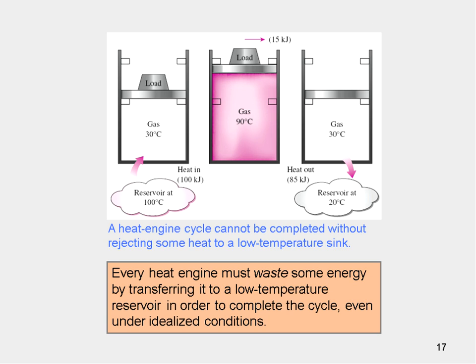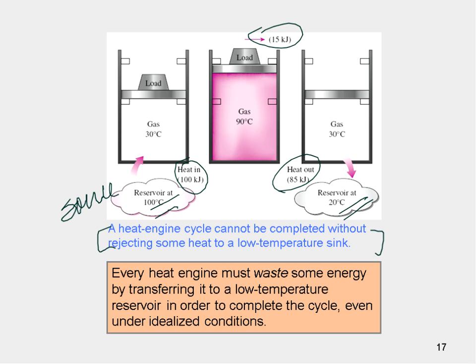Every heat engine must waste some energy by transferring it to a low-temperature reservoir — the heat engine cannot be completed without rejecting some heat to a low-temperature sink. For example: 100 kilojoules of heat going in, 15 kilojoules of work produced, and 85 kilojoules of heat out. You have a high-temperature reservoir as the source and a low-temperature reservoir as the sink.